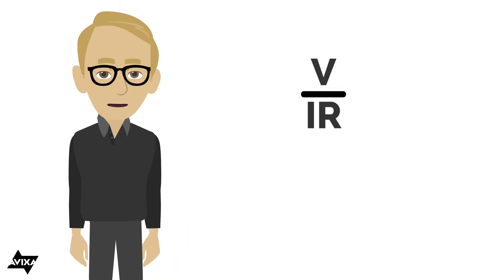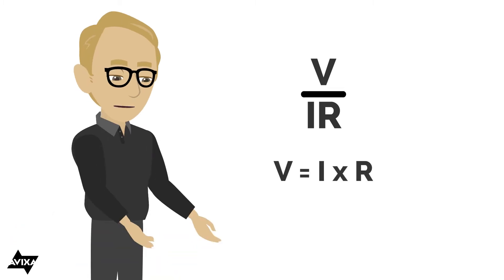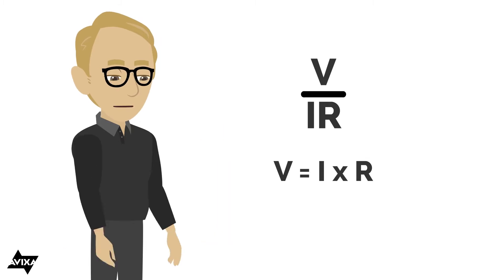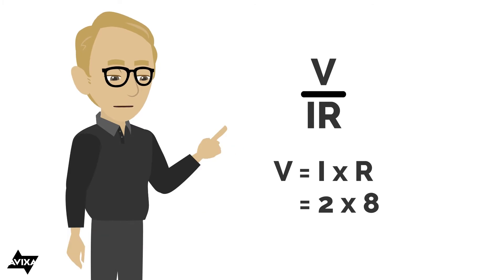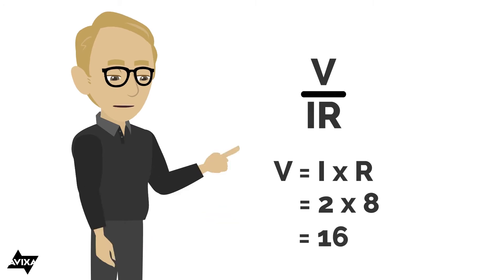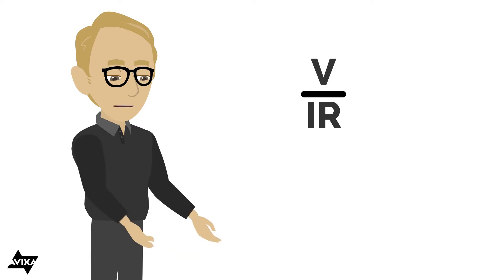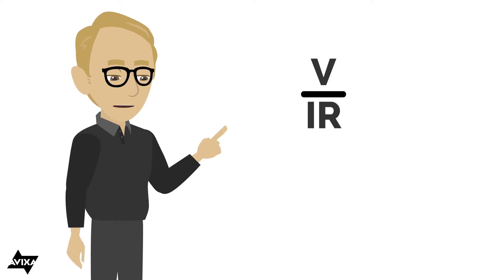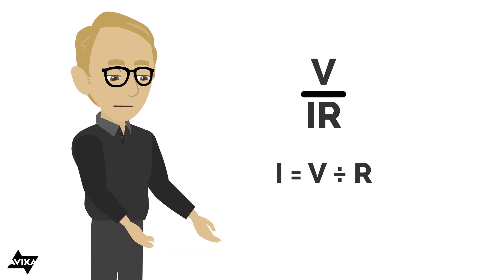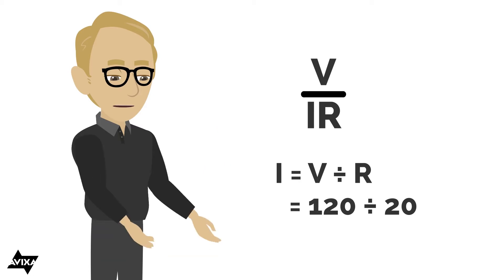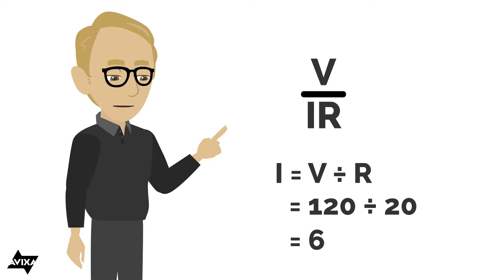Let's do three quick examples. To solve for voltage: voltage equals I times R. The current is 2 amperes and resistance is 8 ohms — that gives us 16 volts. To solve for current: that's voltage divided by resistance. With a voltage of 120 volts and a resistance of 20 ohms, 120 divided by 20 gives us 6 amperes of current.